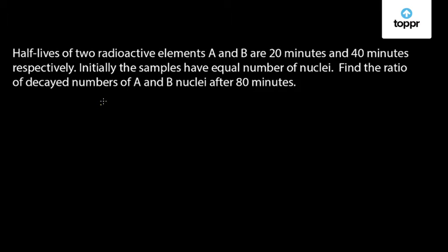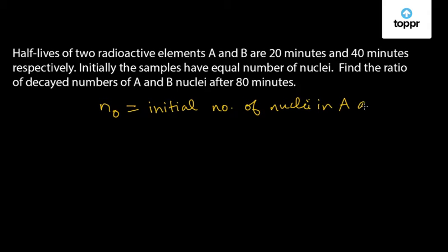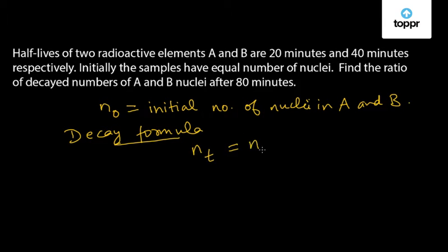Let us assume that the initial number of nuclei in samples A and B both are N0. Now, we know the decay formula. The decay formula is given by Nt equal to N0 e to the power minus lambda t, where Nt is the amount of radioactive substance present after time t, N0 is the initial amount, lambda is the decay constant, and t is the time taken.